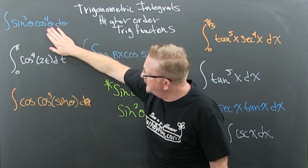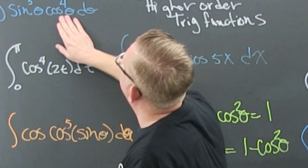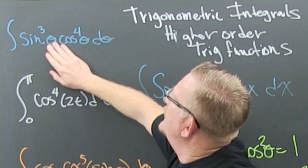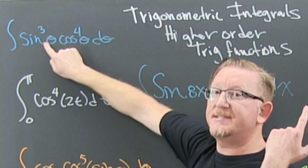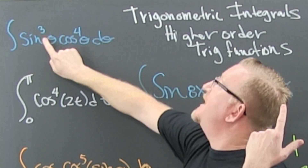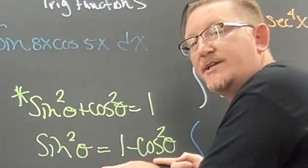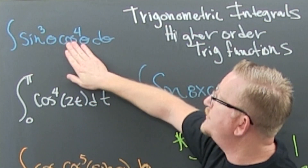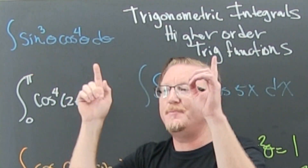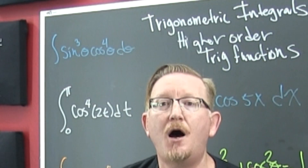You're trying to manufacture a u-du situation. On this one, you want to take one sine away, and then the sine squared you want to convert into cosines, because you get the u-du situation where your u is going to be cosine and then your du is going to be that one sine that's left over. That's what you want to try to do on most of these.